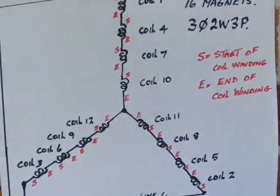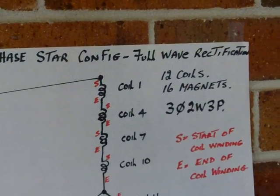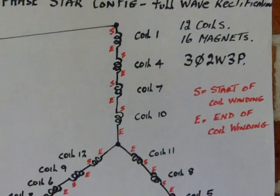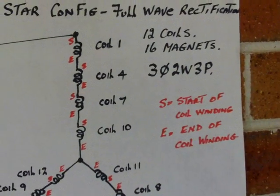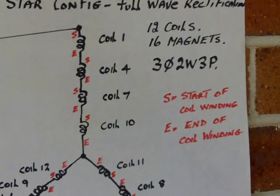Looking at the diagram we are using 3 phase configuration, 4 wave rectification, we are using 12 coils. S is for the start of coil winding, E is for the end of coil winding.